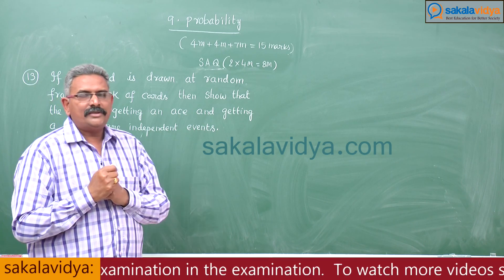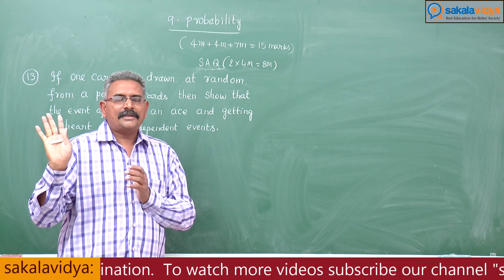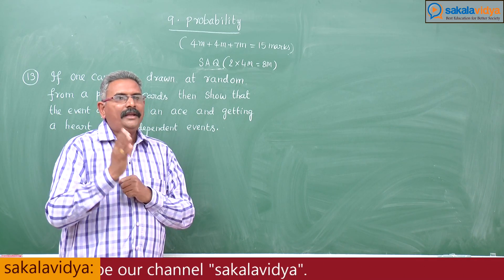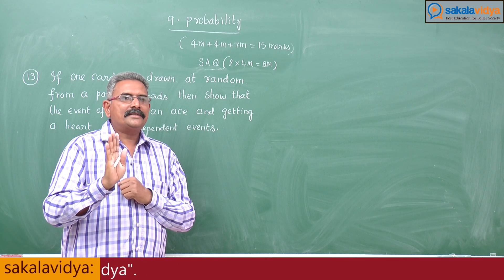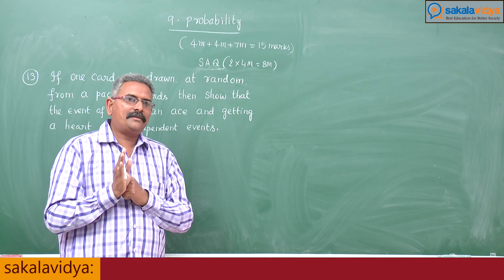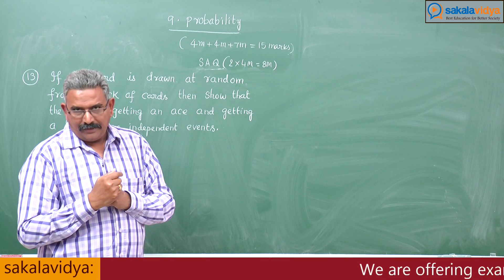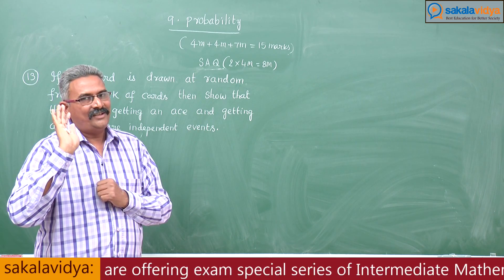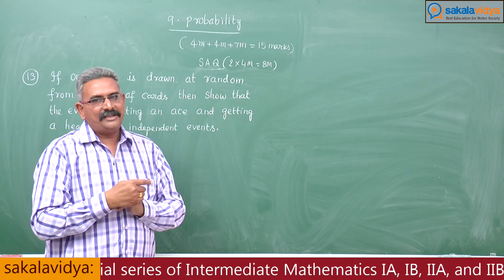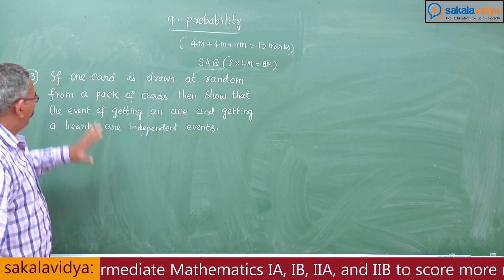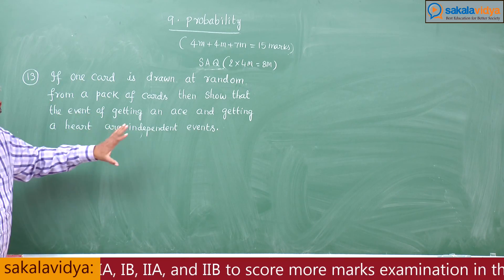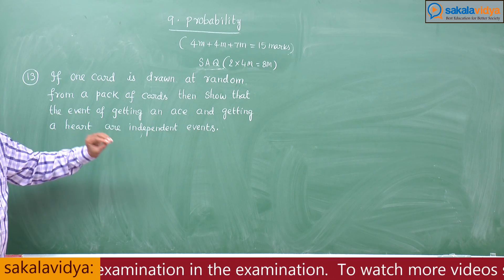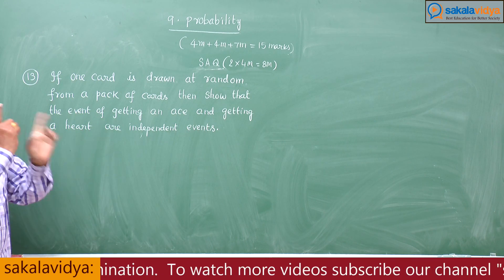In your examination, define independent events. If the question is for one mark, you can give this answer: Let A and B be any two events such that P of A intersection B is equal to P of A into P of B, then A and B are said to be independent events. This may be useful for a one mark question. Now in this problem, it is enough to prove that P of A intersection B is equal to P of A into P of B.